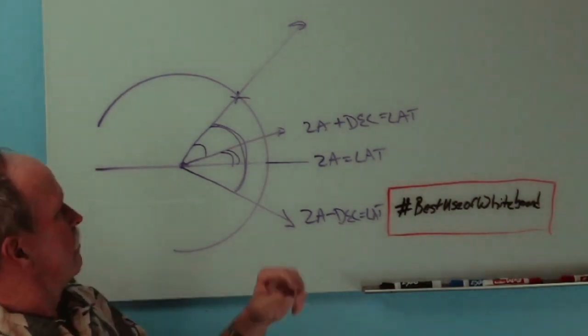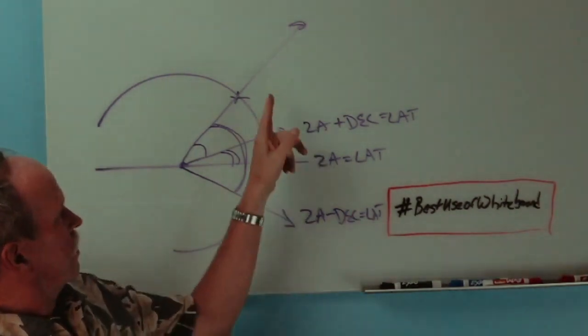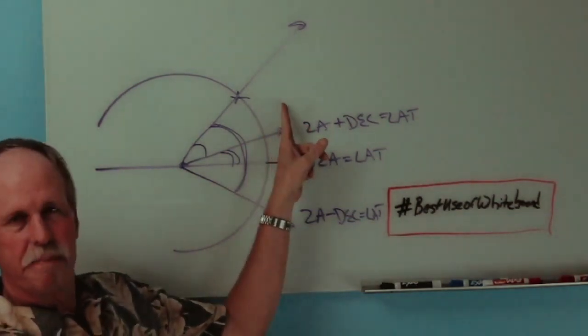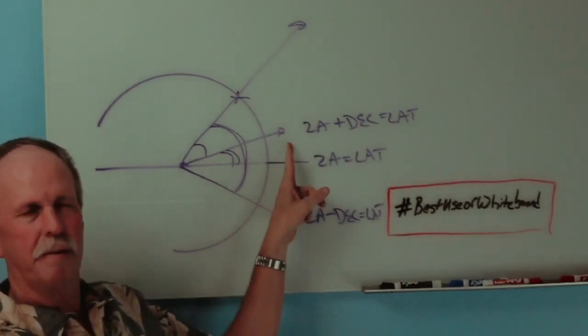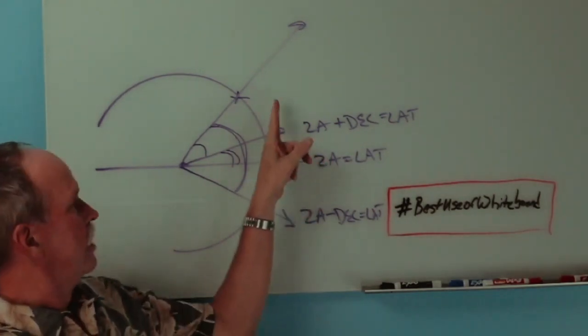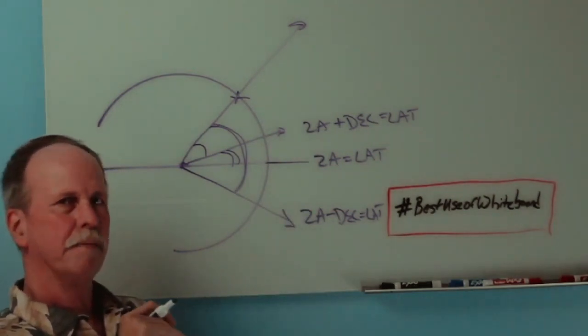So for example, when I was in Florida, the Sun was north of the equator. My zenith angle that I measured was about 15 degrees. The declination was also about 15 degrees. So you add them together, and you found that my latitude was approximately 30 degrees.